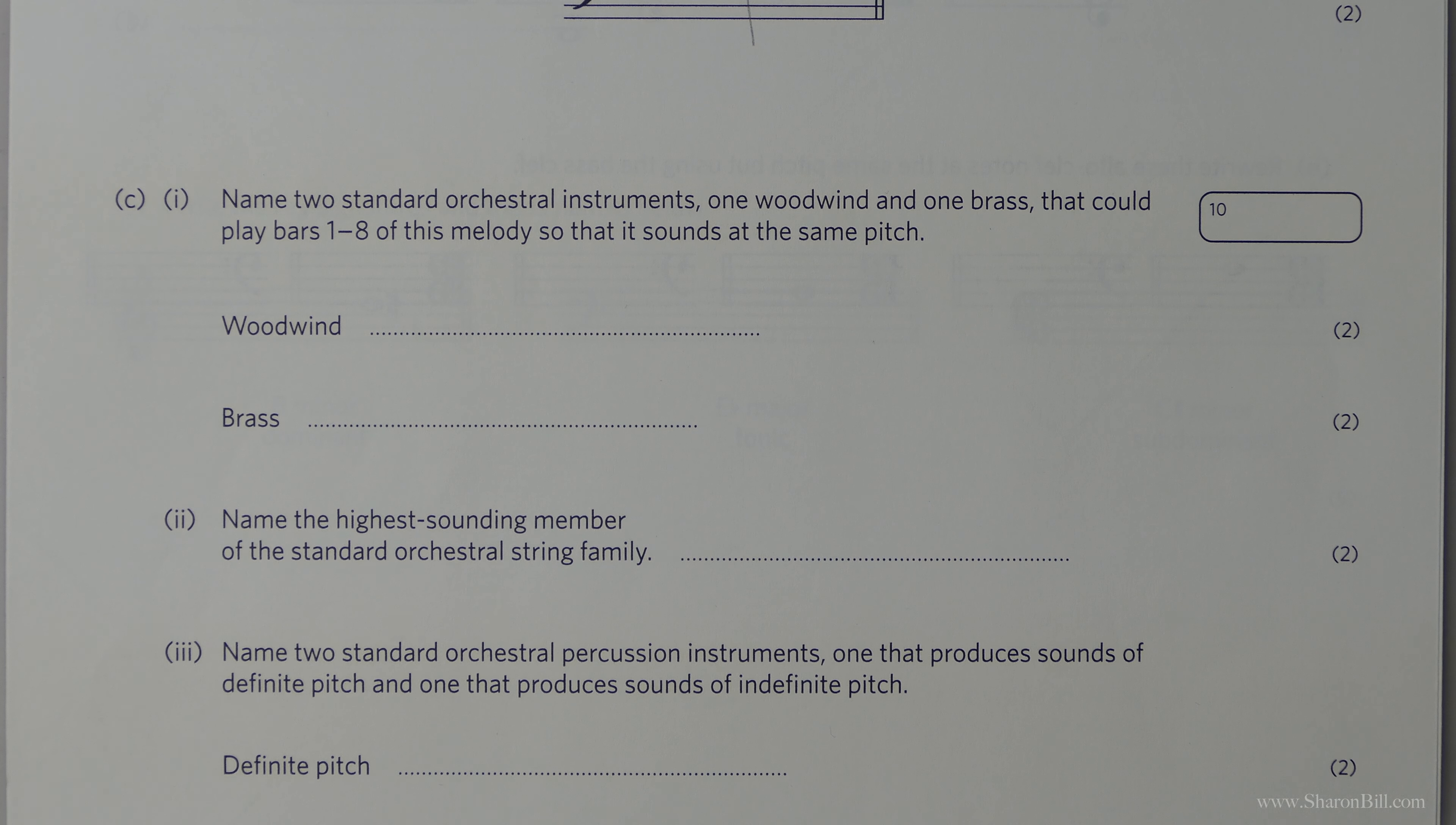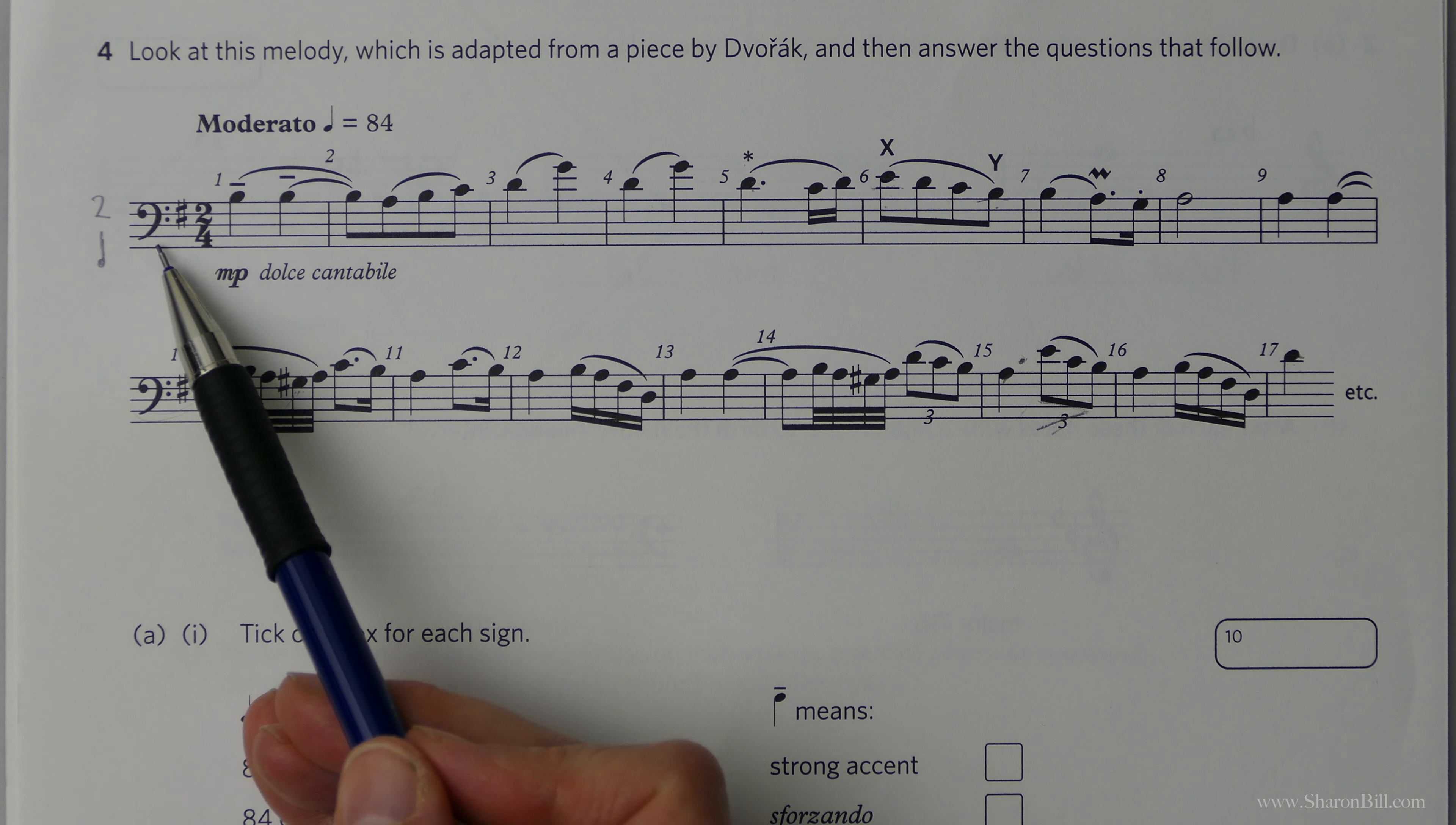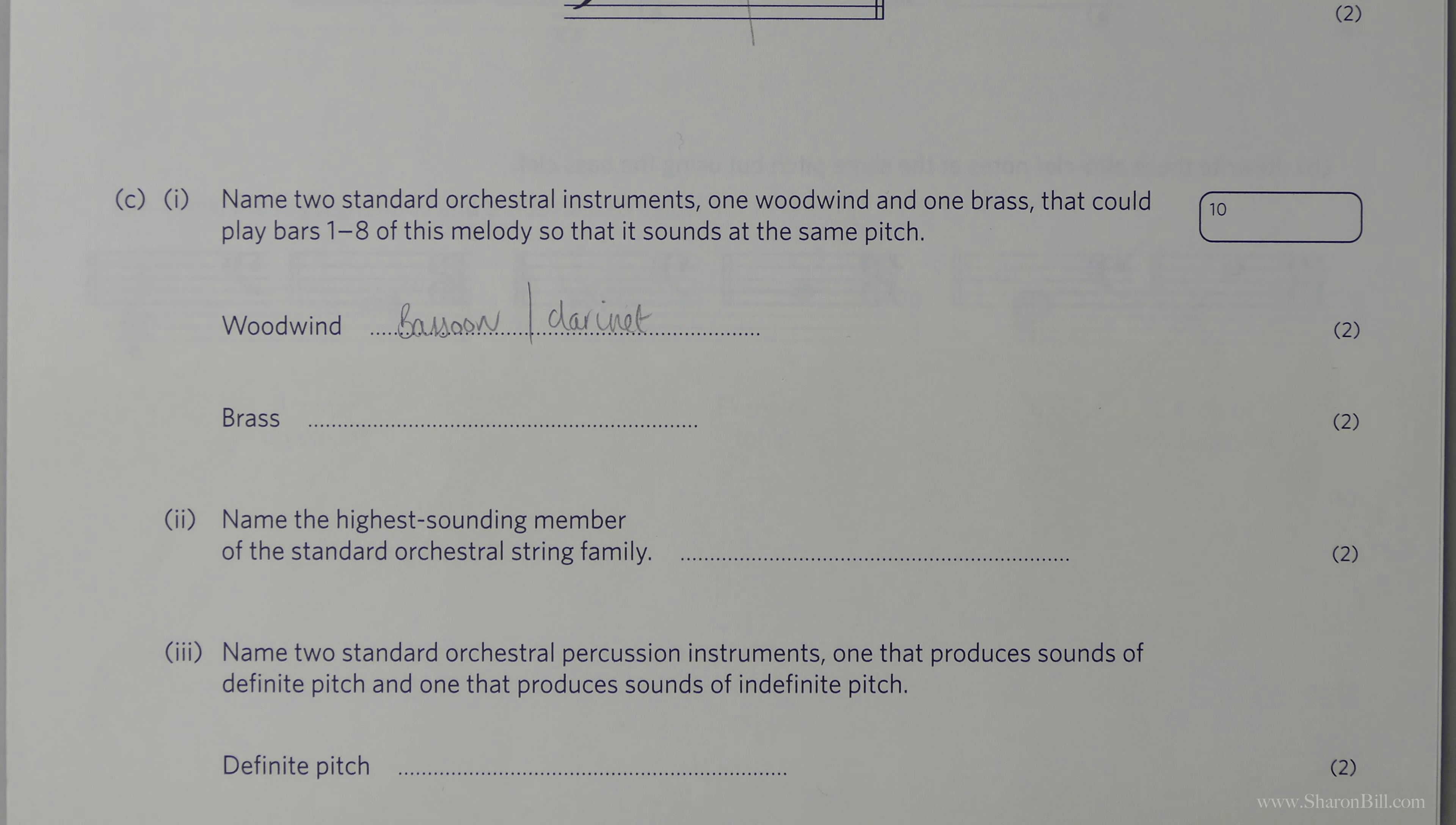And now we move on to some general information. We're asked to name two standard orchestral instruments, one woodwind and one brass that could play bars one to eight of this melody so it sounds at the same pitch. So we're looking for an instrument. It doesn't matter, it's not asking you about whether it's a transposing instrument. It's just saying what's comfortable at this pitch range. So we're in the bass clef, but we're quite high in the bass clef. So the bass clef woodwind instrument that comes to mind first of all is the bassoon. But actually, although it would be in a different clef, the clarinet itself can go this low quite comfortably. So you could say clarinet even if you wanted to. That could manage that range.